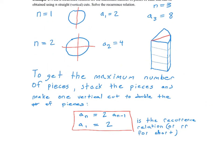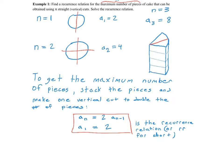One thing to think about when finding recurrence relations: we had the pattern for a sub 1, 2, and 3 — we got 2, 4, and 8. The next number is 16, but we do need further reasoning before we can just say we multiply by 2 each time. Although it works here, it might not work in other situations. We really need a logical reason to explain why the next number is 16 — specifically, that we stack the pieces, cut them vertically, and the number of pieces doubles.